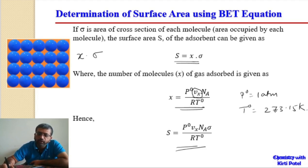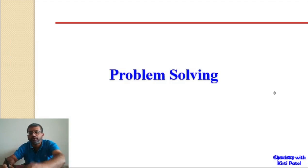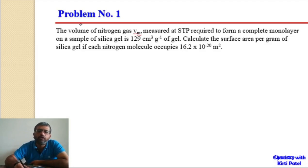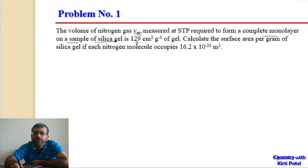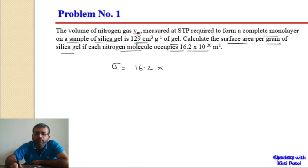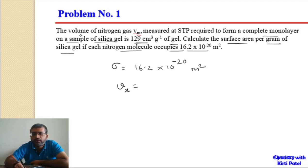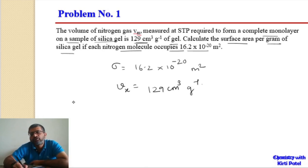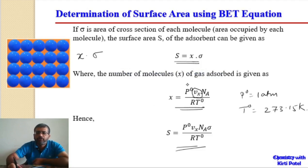Problem 1: The volume of nitrogen gas Vm measured at STP required to form a complete monolayer on a sample of silica gel is 129 cm³ per gram of silica gel. Calculate the surface area per gram of silica gel, given that each nitrogen molecule occupies a cross-sectional area σ = 16.2 × 10⁻²⁰ m². So we have σ = 16.2 × 10⁻²⁰ m² and Vx = 129 cm³/g.